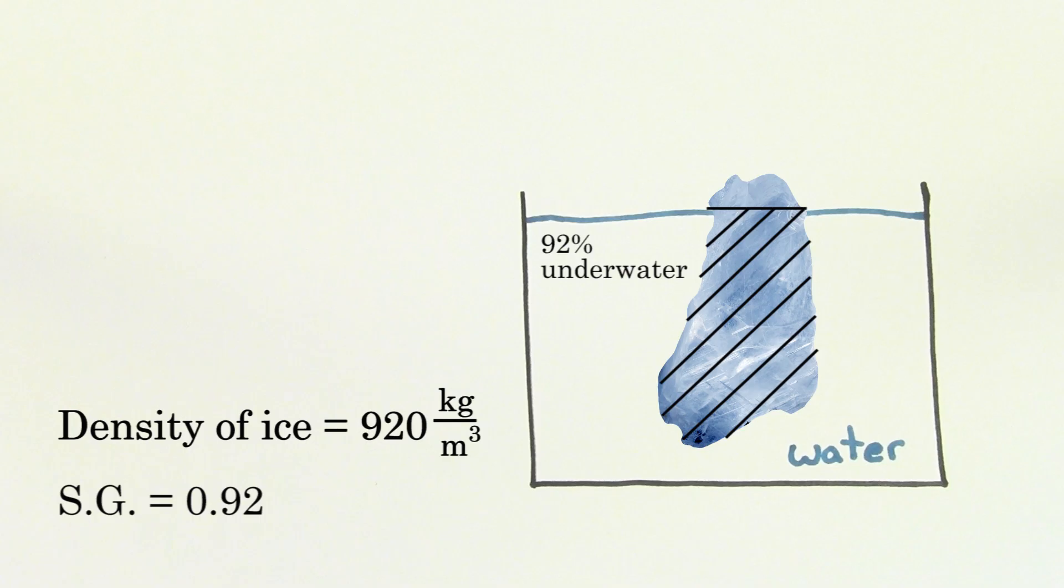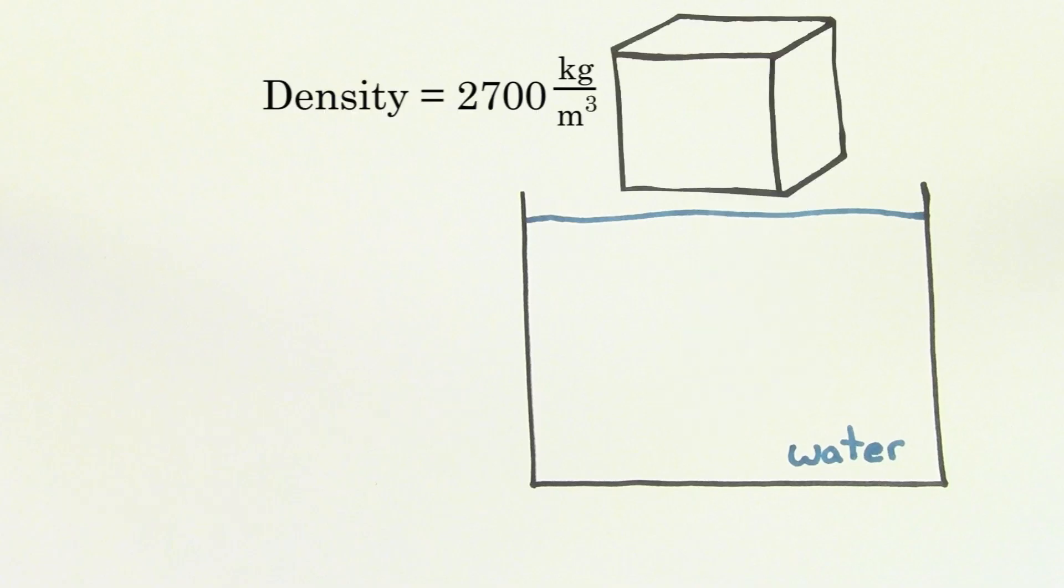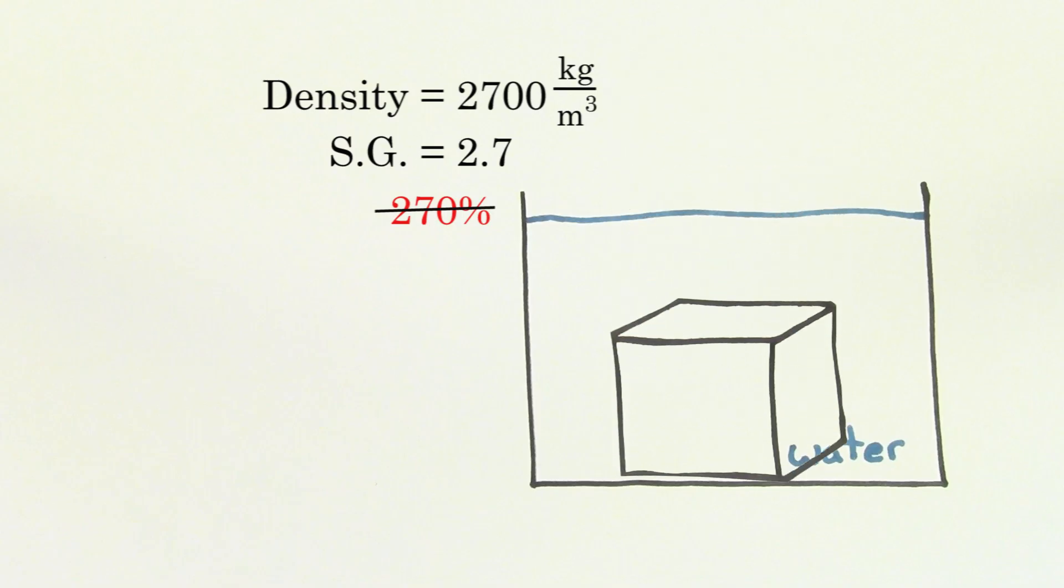But what if we were to use a cube that had a density of 2,700 kilograms per meter cubed? The specific gravity would be 2.7, which means that 270% of this cube would be submerged beneath the water. But you can't have more than 100% of an object submerged. Even if the object were to sink, the maximum amount submerged would be 100%.